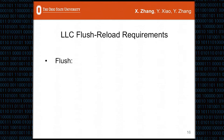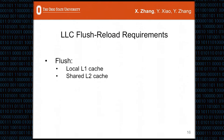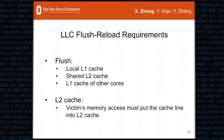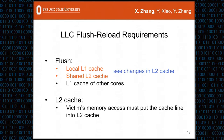Here is a brief summary of the Flush+Reload requirements. First, the flush instruction should flush the local L1 cache, the shared L2 cache, and the L1 caches of other cores. There is another requirement on the L2 cache: the victim's memory access must put the cache line into the L2 cache, so that the attacker has a chance to observe it. The first two flush requirements are important because they enable the attacker to see changes in the L2 cache.